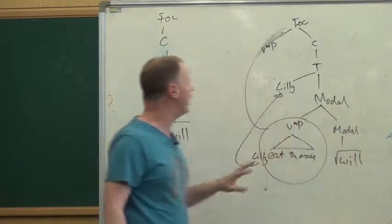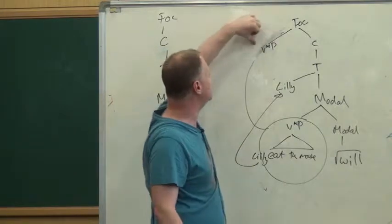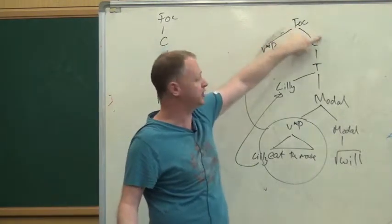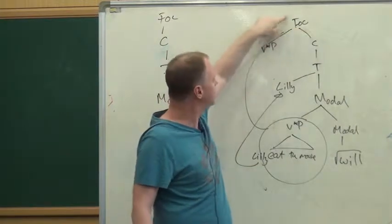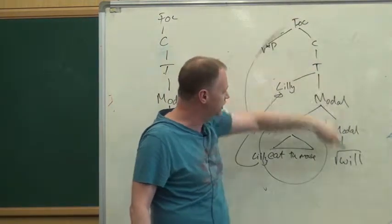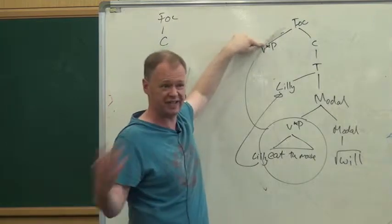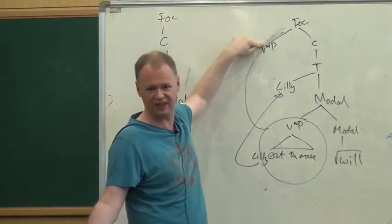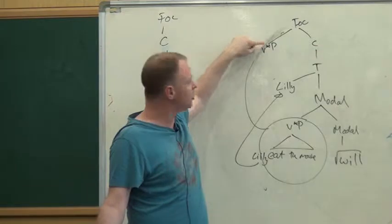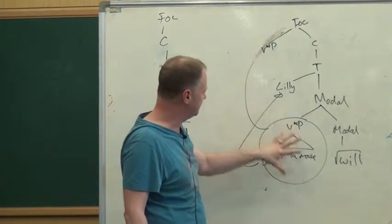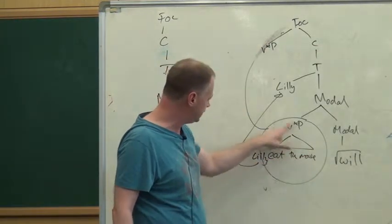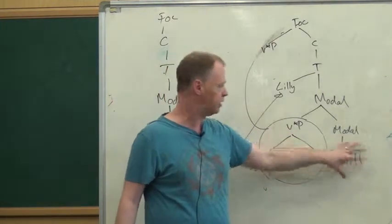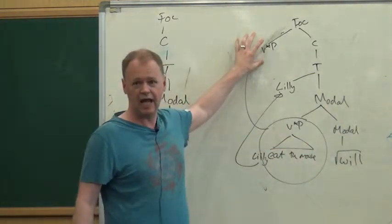So now if we apply our definitions, we can allow this one to be the specifier and this one to be the complement. Because this one is rooted with 'will' and this one is rooted with a different extended projection — rooted with 'eat'. So what we're essentially doing is base-generating these V-star-P things as the specifier of an auxiliary.